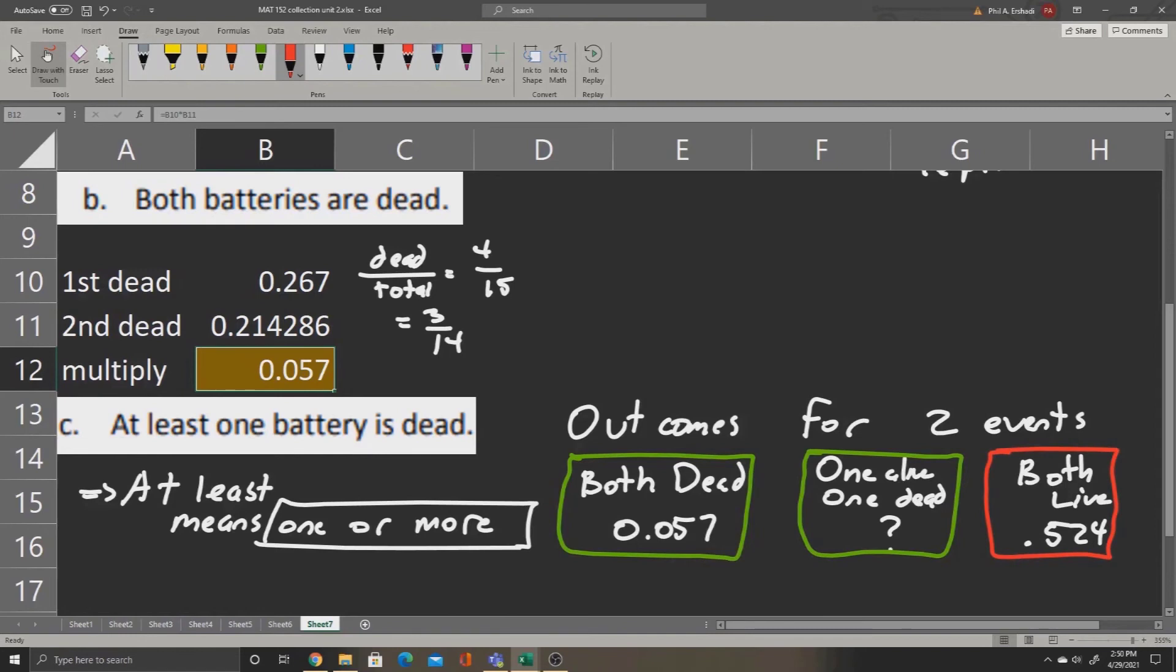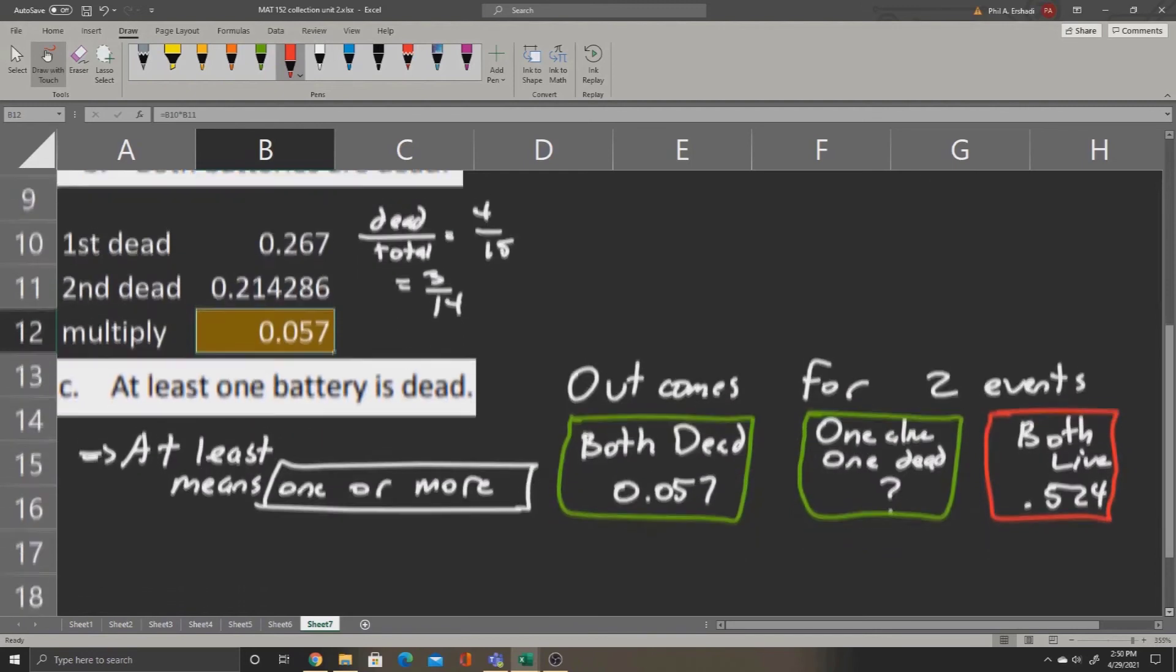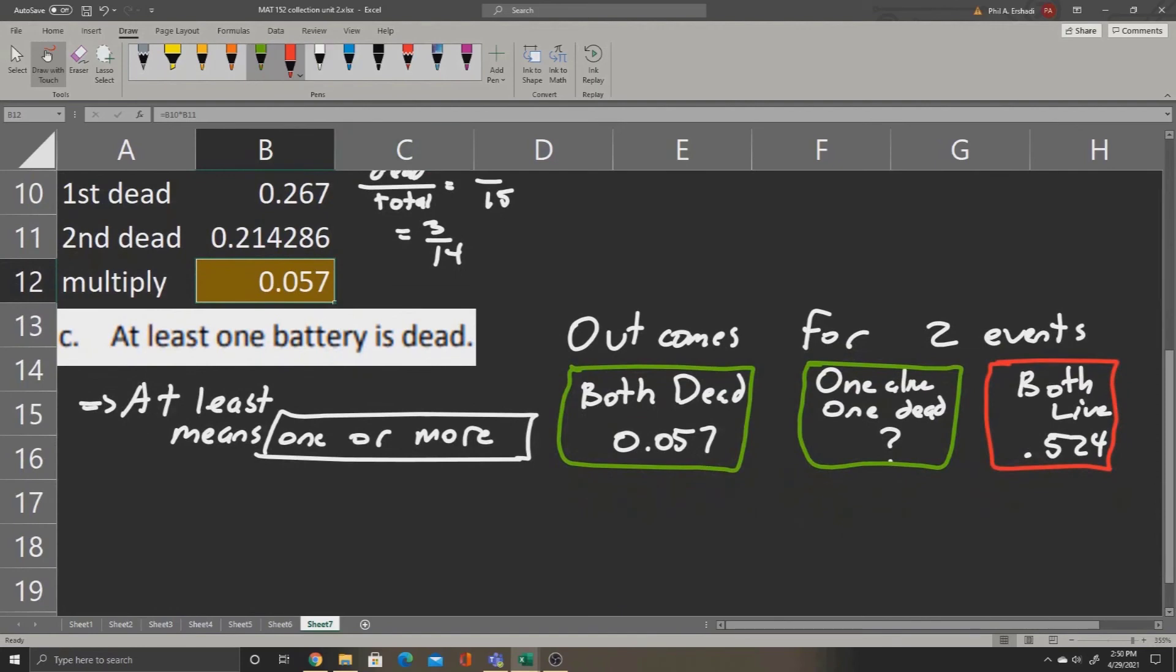Now it may look like it could be a problem that we don't know the probability for one being alive and one being dead, but it turns out we don't have to. To find the probability of the two green ones, all we have to do is take 1 minus the red one and all that's left is green.